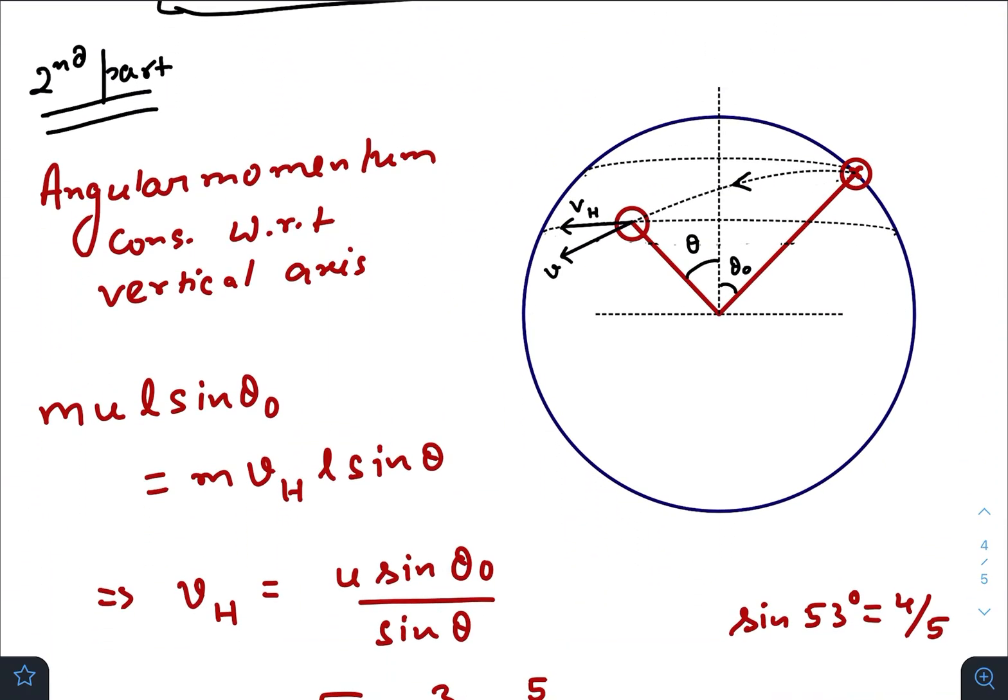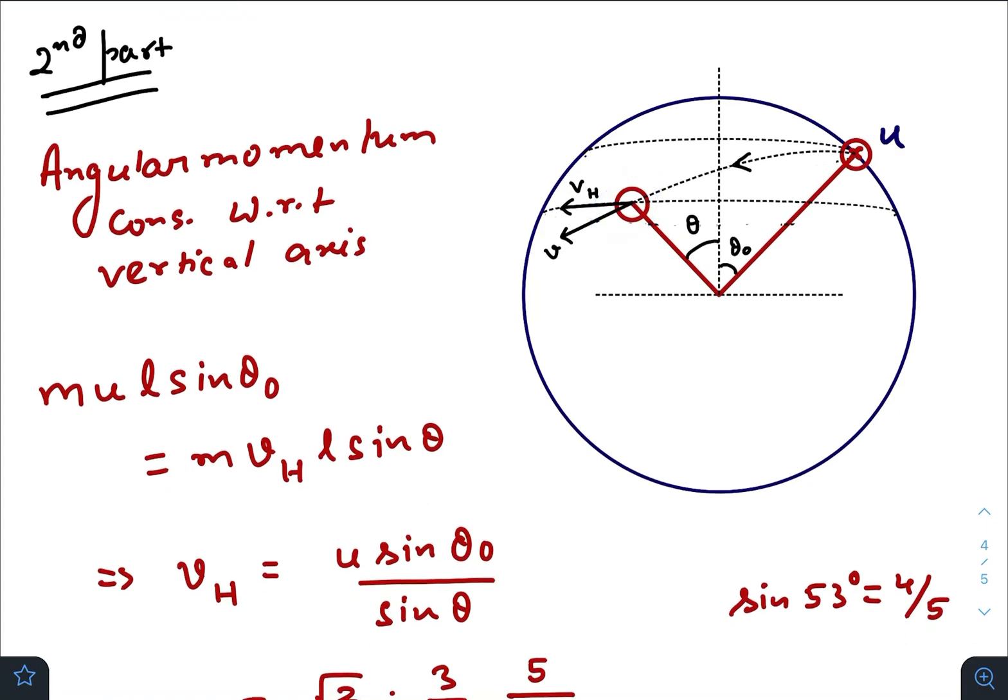For that we will use angular momentum conservation with respect to the vertical axis. Initial angular momentum with respect to this axis is muL sin θ₀. At this instant the angular momentum would be mvₕ—now this vₕ is perpendicular to this line.